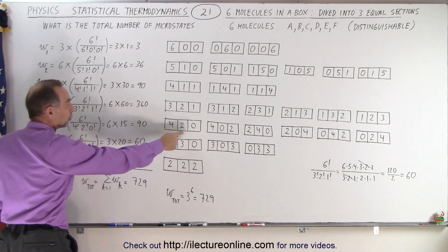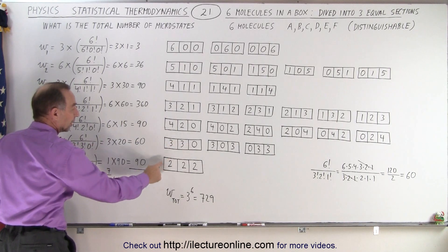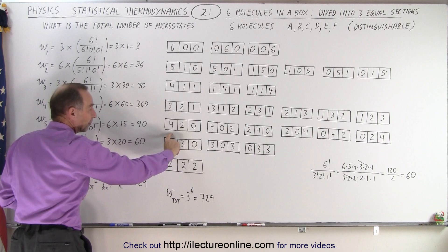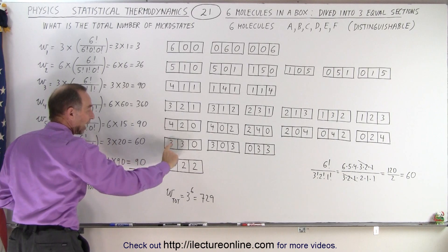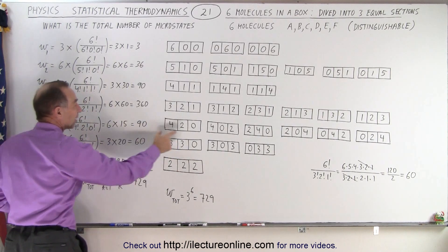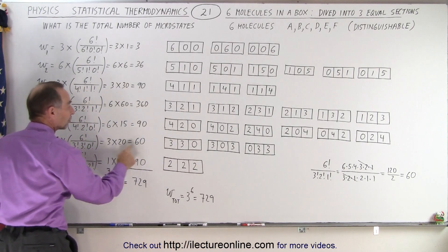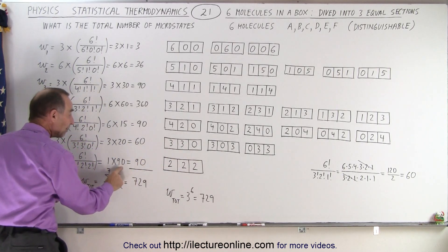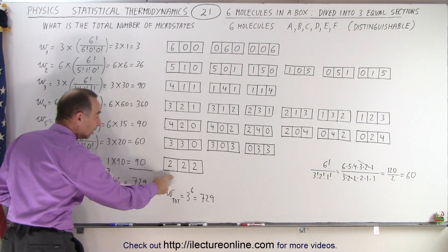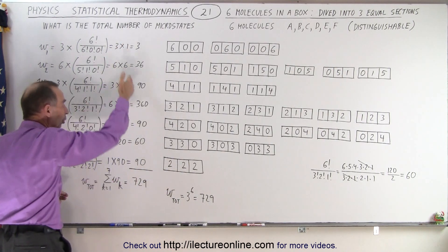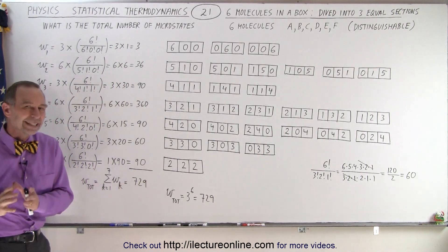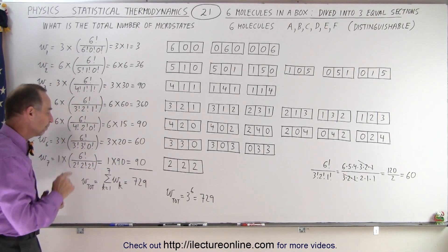Then we continue. We have (4,2,0), (3,3,0), and (2,2,2). There are six different ways (4,2,0) can happen, three different ways (3,3,0) can happen, and one way (2,2,2) can happen. We have 15 microstates for each (4,2,0) configuration, 20 microstates for each (3,3,0) configuration, and 90 microstates for (2,2,2). When we add up all the various microstates, we have a total of 729 microstates.